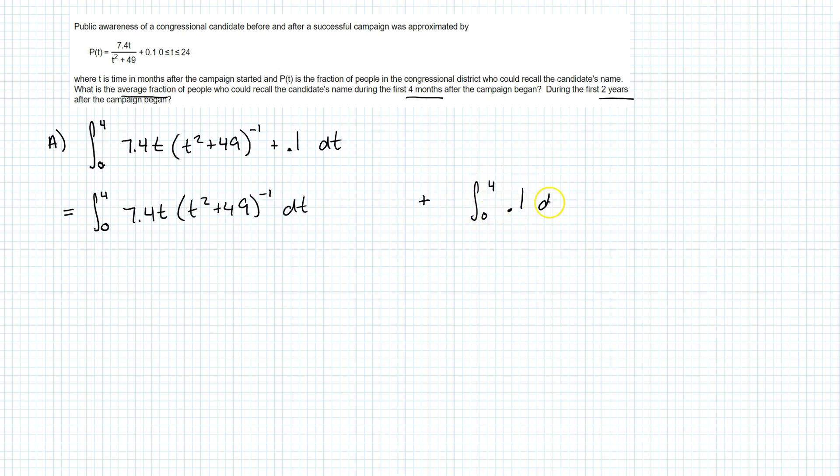Okay, so I'm doing two separate integrals. Let's do the easy one first. This one isn't bad, so this one's just going to be 0.1T evaluated from 0 to 4, so that's 0.1 times 4 minus 0.1 times 0, and that's just 0.4. So that's not too bad.